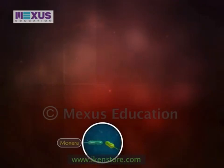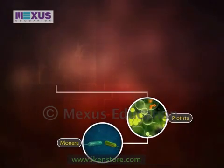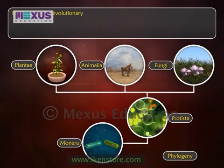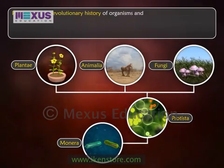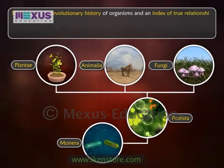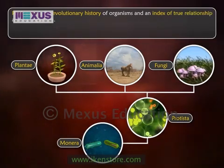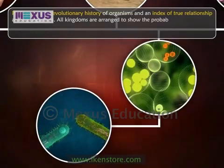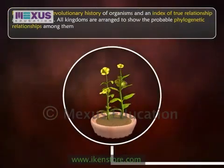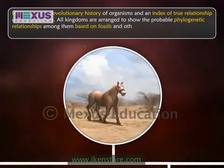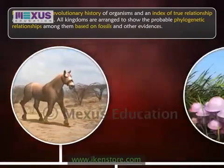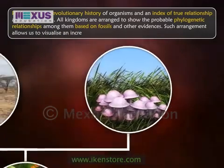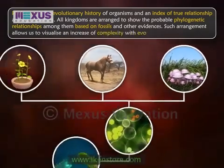The last and fifth factor is the phylogenetic relationship. Phylogenetic relationship is the evolutionary history of organisms and an index of true relationship among organisms. All kingdoms are arranged to show the probable phylogenetic relationships among them based on fossils and other evidences. Such arrangement allows us to visualize an increase of complexity with evolutionary time.